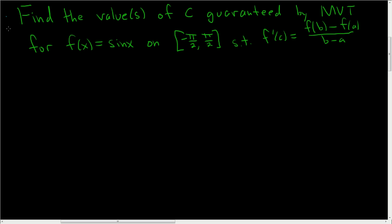This is a harder mean value theorem problem. Well, not harder, but it's a little bit tricky. So we want to find the values of C guaranteed by the mean value theorem for this function, sine x, on this interval, such that the derivative of f at C is equal to this expression here.